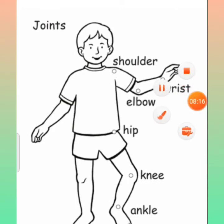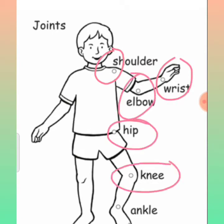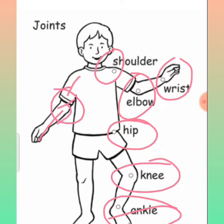Again, let me show you the joints. These are some joints: shoulder joint, wrist joint, elbow joint, hip joint, knee joint, and ankle joint. You all know what joints are — the place where two or more bones join together is called a joint.